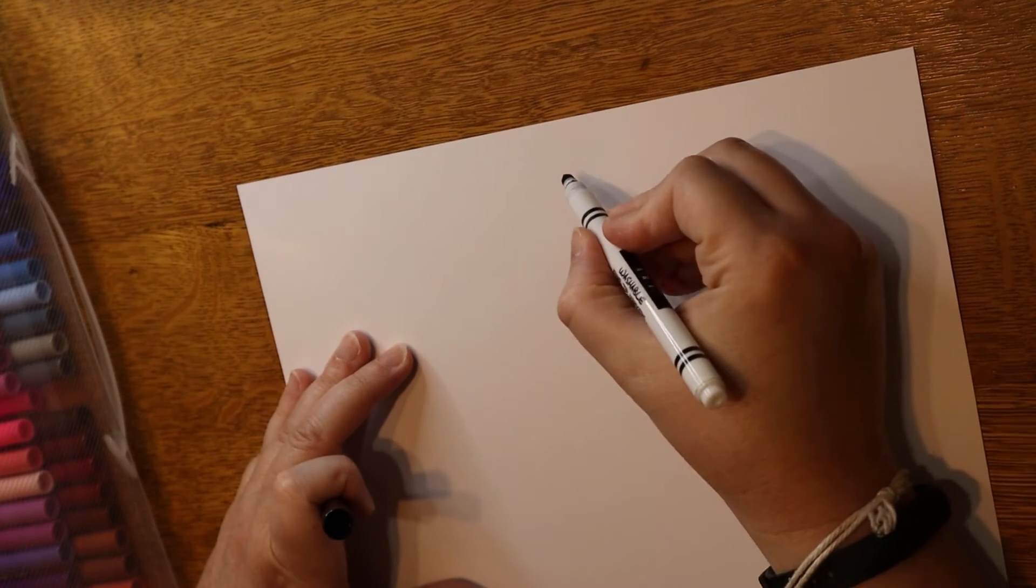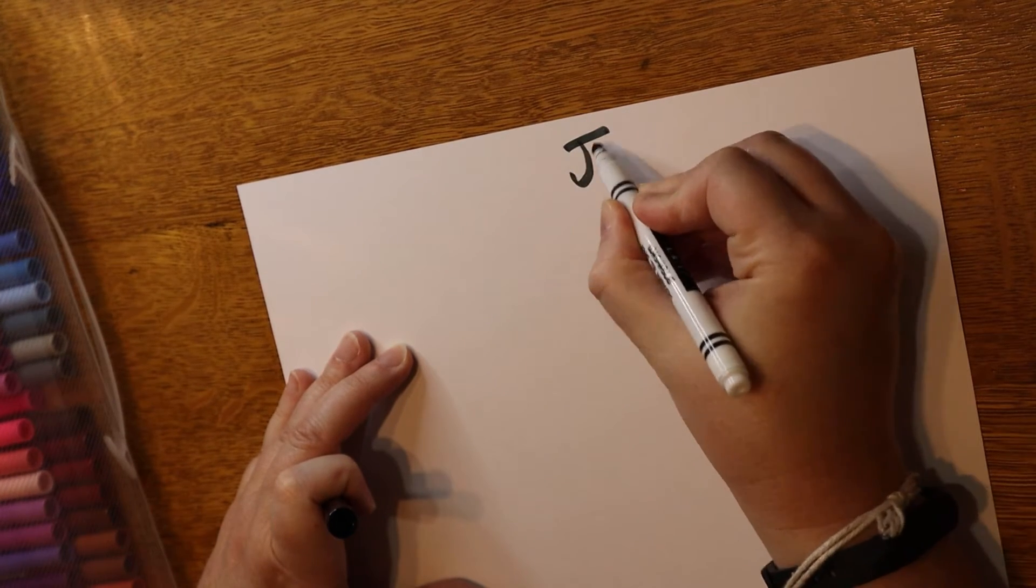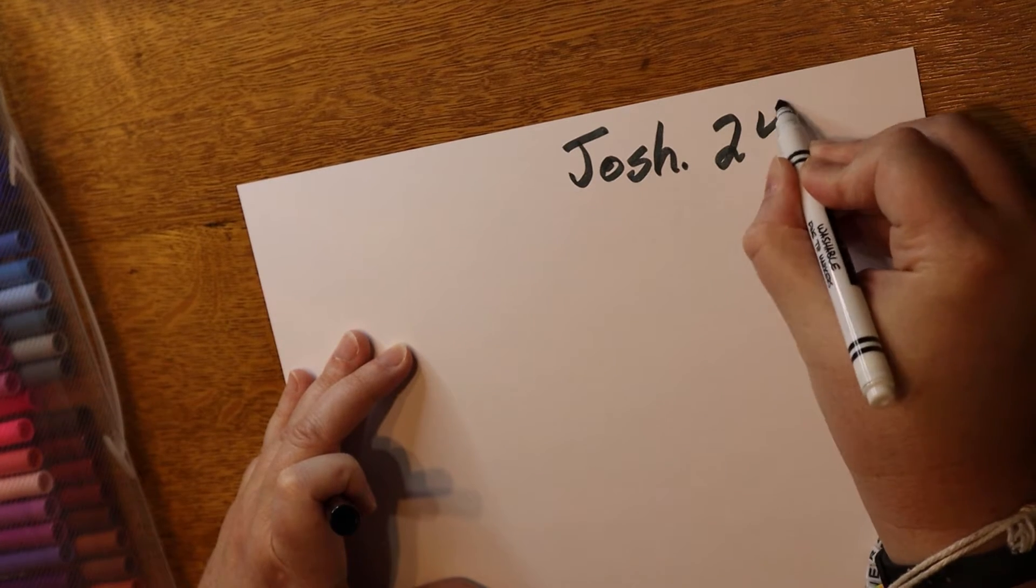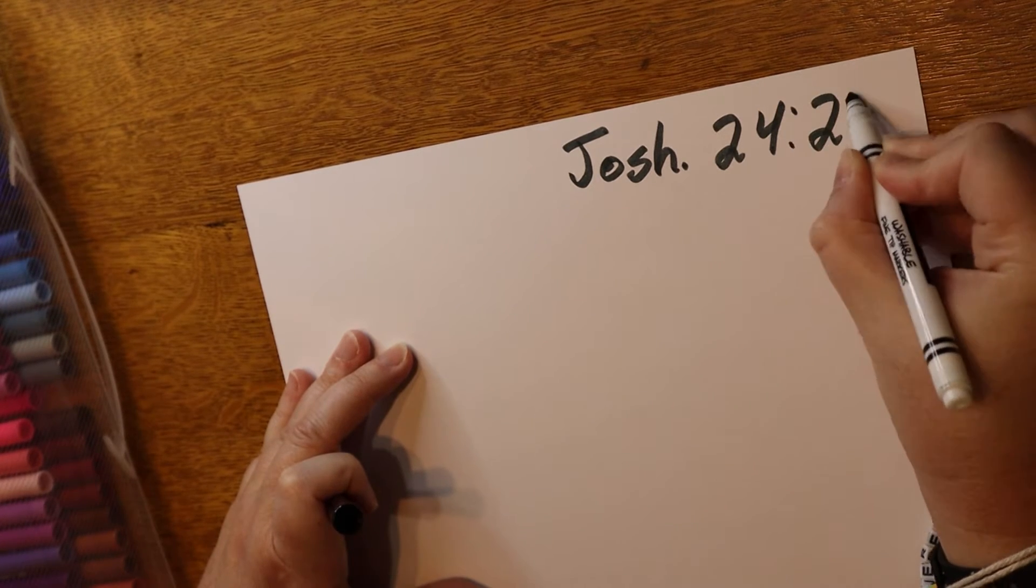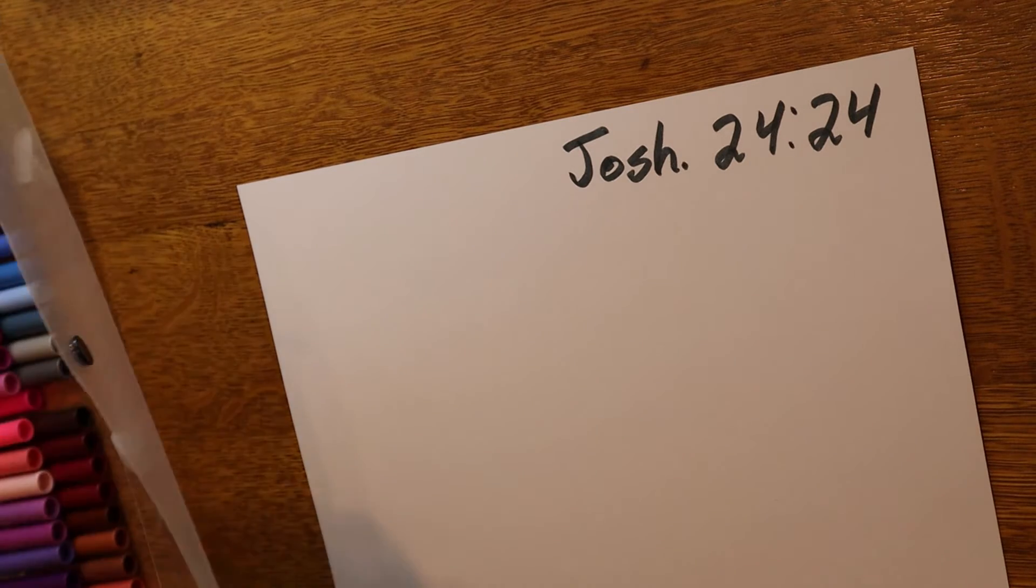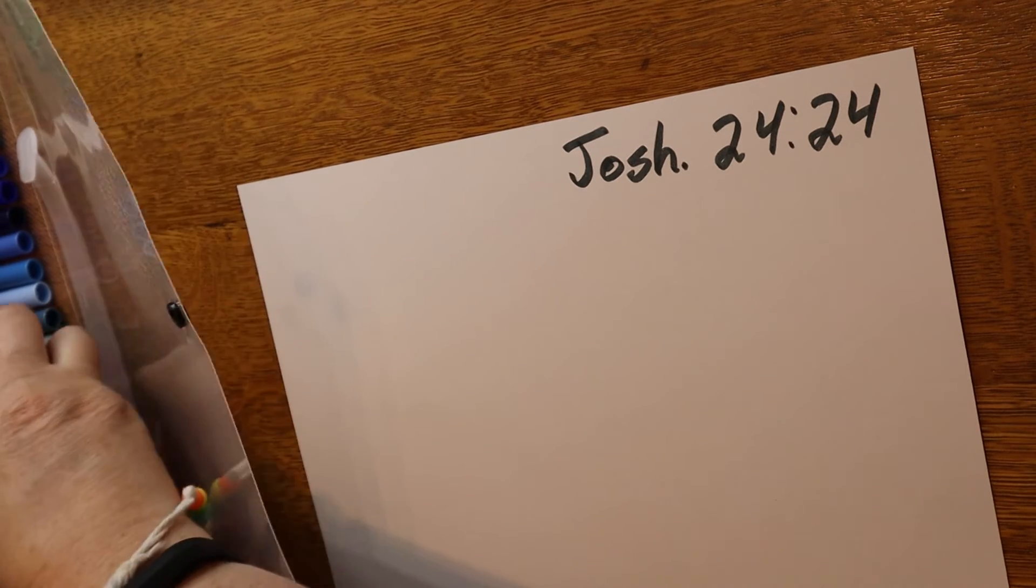Let's start by writing the reference at the top of the page. J-O-S-H is an abbreviation for Joshua. Then we want 24, colon, 24. Remember that the chapter comes first before the colon and the verse comes after.